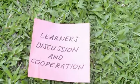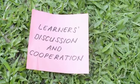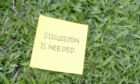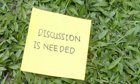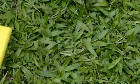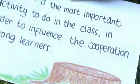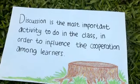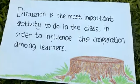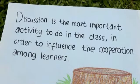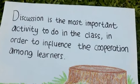The fourth is learners' discussion and cooperation. In this learning process, discussion is needed. Discussion is the most important activity to do in class in order to influence the cooperation among learners.